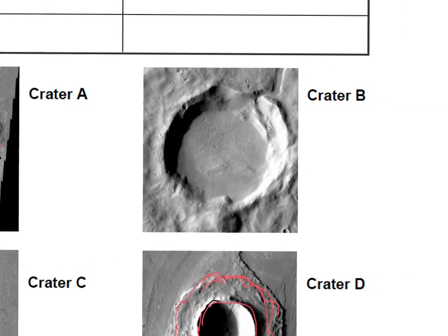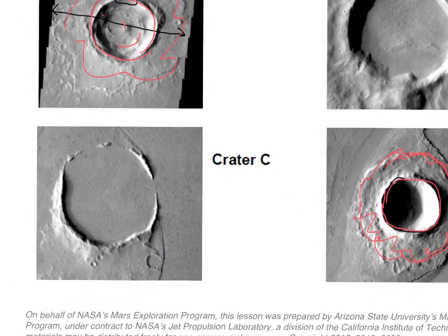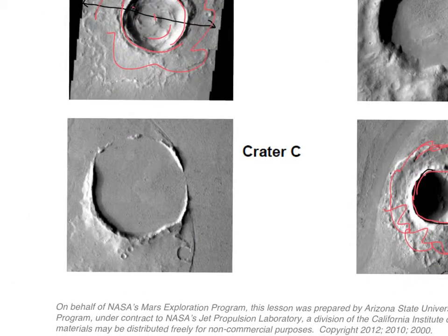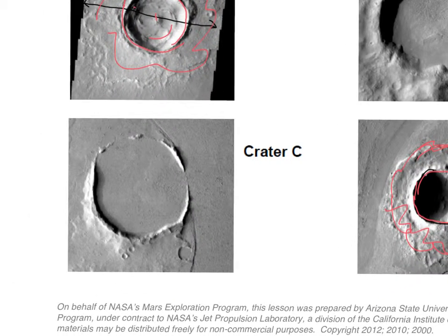Crater B is modified — you can see how softened the edges look. Clearly that's been around long enough that there's been some time for erosion to smooth out the rough edges. And then obviously that leaves crater C as an example of a destroyed crater.